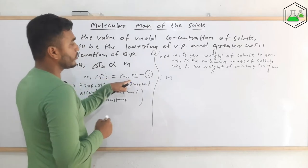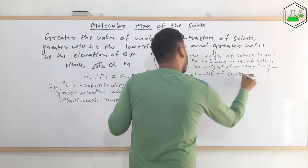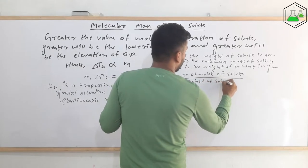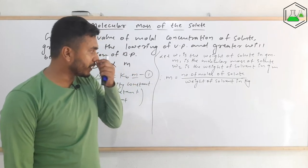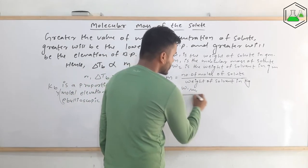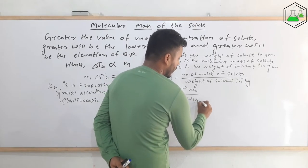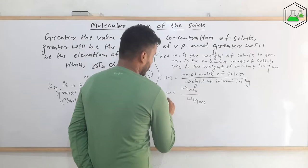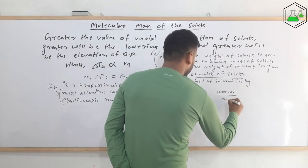The value of m, that is molal concentration of the solute, is given by the formula: number of moles of solute divided by weight of solvent in kg. Number of moles = w1/m1, and weight of solvent in kg = w2/1000, because to convert grams to kg we divide by 1000. Therefore m = 1000·w1 / (m1 × w2).